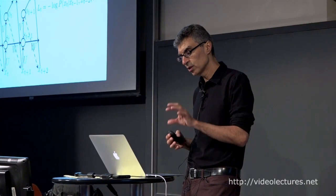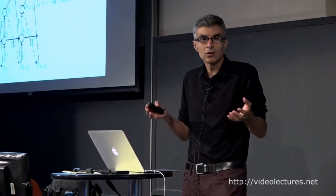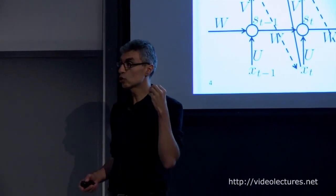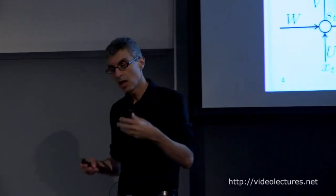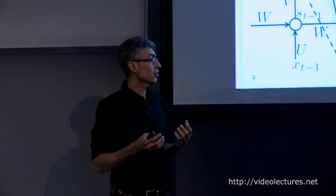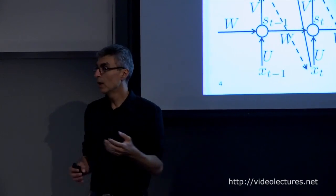This frames recurrent nets in a classical maximum likelihood setting, which is very convenient. If you have a sequence x_1 to x_t and you're trying to characterize their joint probability — how the different elements of the sequence interact in terms of statistical dependencies — we'd like some kind of model of the joint. But the joint distribution over a variable-length sequence is a complicated object, and it's not clear how we can write a function that has a variable number of inputs.